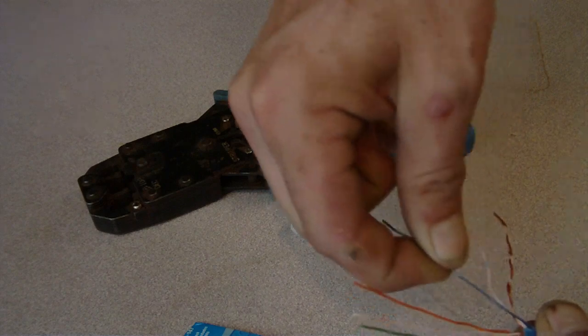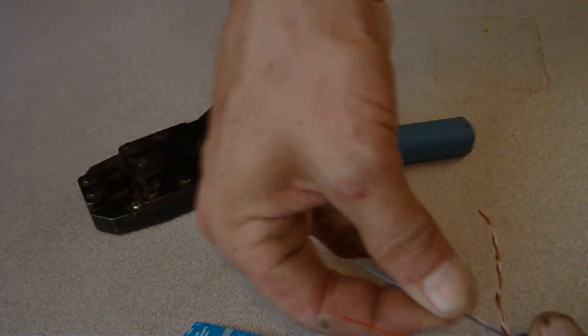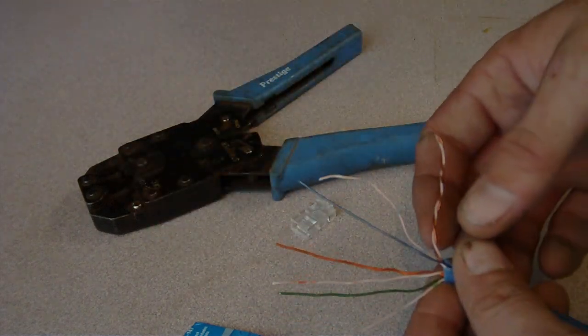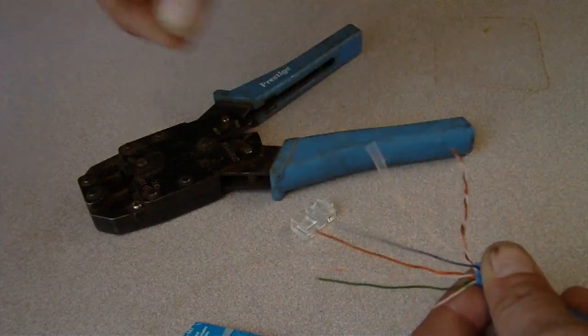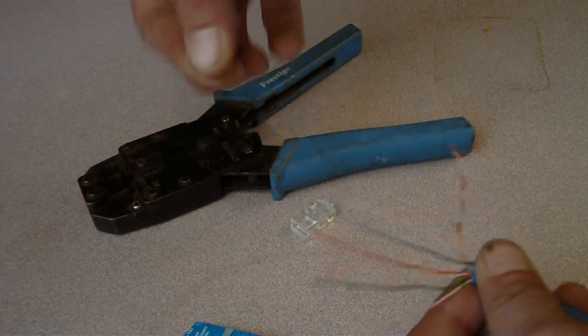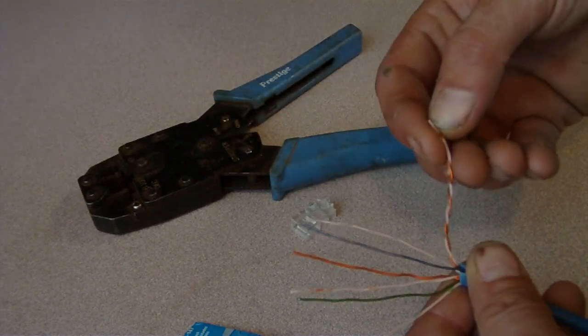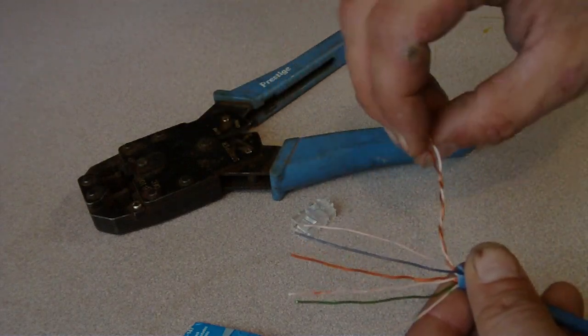And when you do this, I always like to take it, straighten them out good like this so you got a good nice straight connection. And then we're going to straighten out our light blue and we're just kind of fan them out like this. And then last is going to be light brown and then brown according to the T568A configuration.